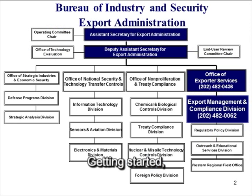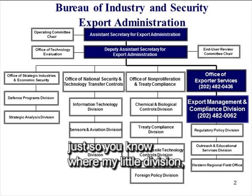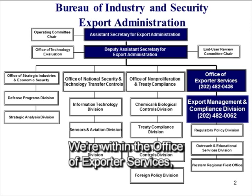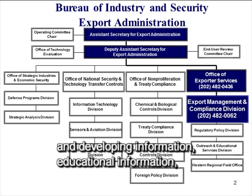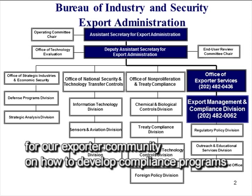Getting started, some background: I have an org diagram so you know where my division — Export Management and Compliance Division — fits into the Bureau of Industry and Security. We're within the Office of Exporter Services. We do training and developing educational information for our exporting community on how to develop compliance programs, in addition to our outreach and education services division. We also do compliance functions such as confirming compliance with our regulations. The middle two offices in the org chart are the licensing offices where engineers and licensing officers process license applications.